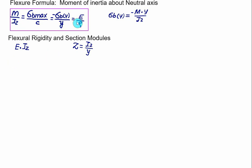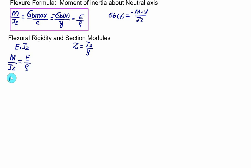If you equate the first term and the last term, we have M — the bending moment — divided by IZ, the moment of inertia about the Z axis, is equal to Young's modulus divided by the radius of curvature rho. So the bending moment M is equal to E multiplied by IZ divided by rho, the radius of curvature.